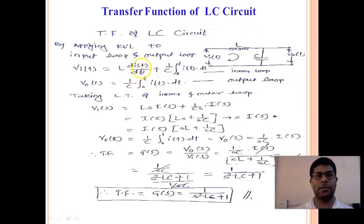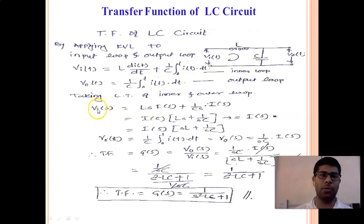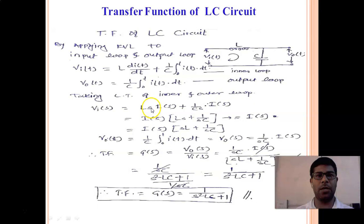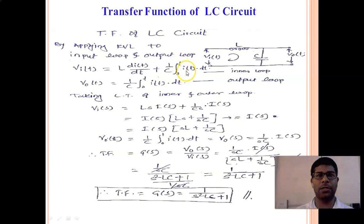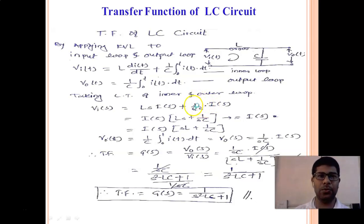We will take the Laplace transform of both the input and output equations. For the input equation, when we take the Laplace transform, V(S) — where T is replaced by S — equals L times S times I(S), since L is constant, dI/dT is replaced by s, and I(T) is replaced by I(S). Plus 1/C is constant, and the Laplace of the integration of I(T)·dT is I(S)/S, so we get 1/C into 1/S into I(S).